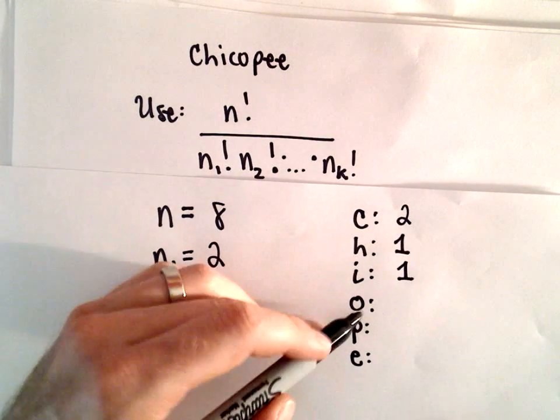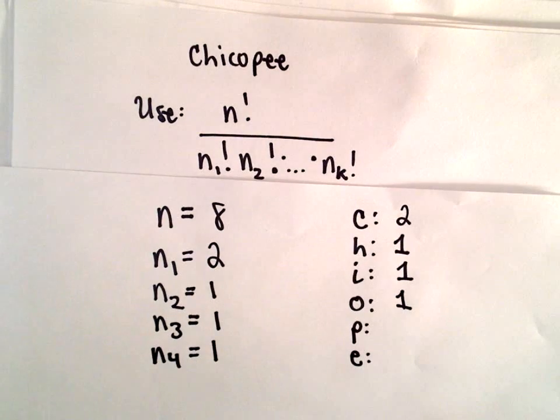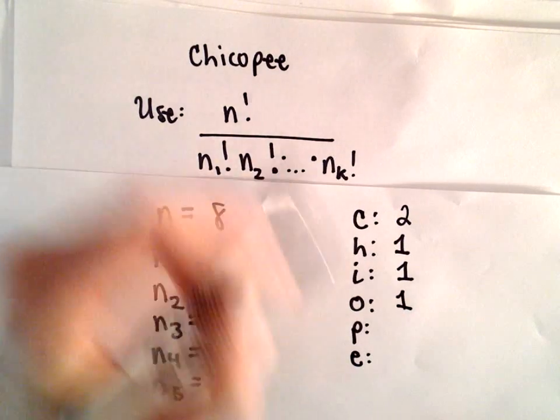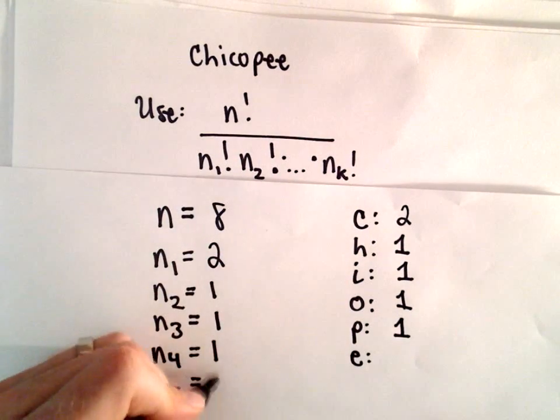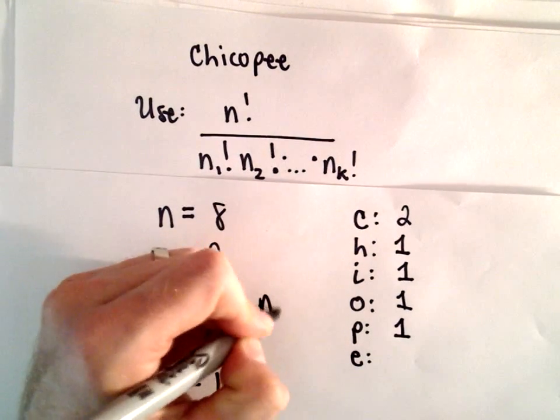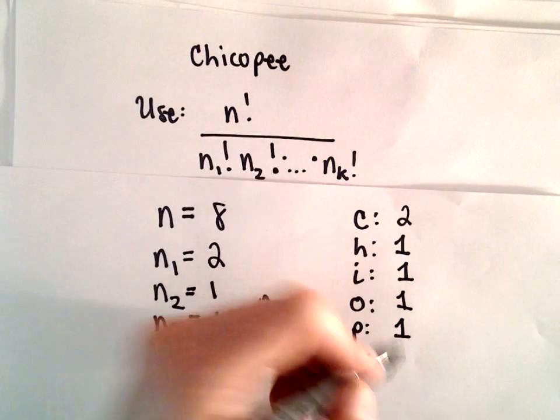So n sub 4, that'll be the number of Os, which is also 1. We've got n sub 5, that'll be the number of the letter P, which is just 1. And last but not least, we've got one more type. So the number of Es will be 2.